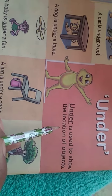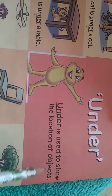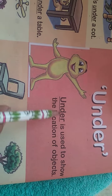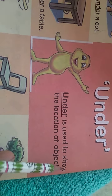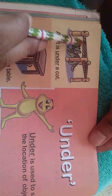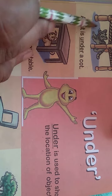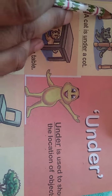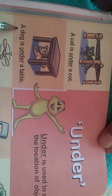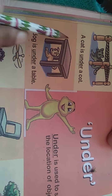This time we are talking about the use of 'under.' Under is used to show the location of objects. For example: a cat is under a cot. A dog is under a table. A baby is under a fan.